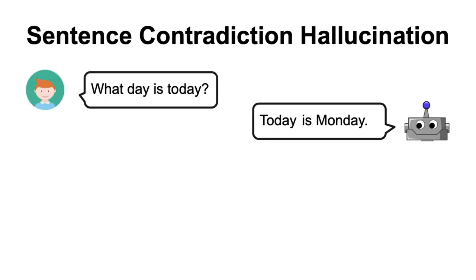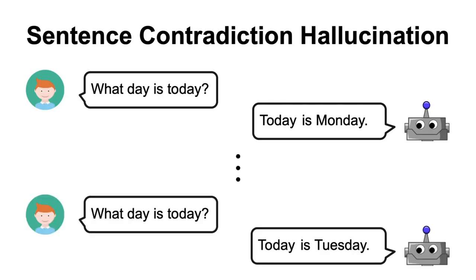However, inventing false facts is not the only way language models can hallucinate. For instance, we can have response contradiction hallucinations where the model may say today is Monday at one point when asked about what day is today, and at a later point, on the same day, when asked the same question again, it may say that today is Tuesday, which would be in contradiction with the previous answer.